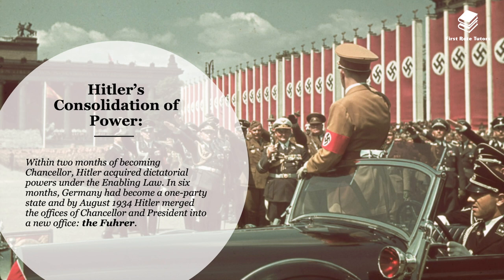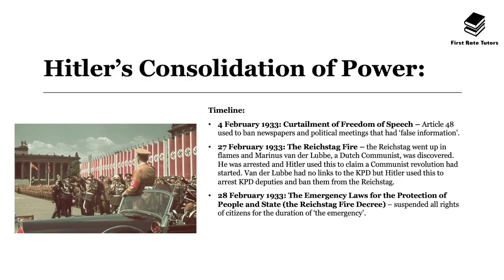When it comes to Hitler's consolidation of power, within two months of becoming chancellor he acquired dictatorial powers under the enabling law. In six months Germany had become a one-party state and by August 1934 Hitler had merged the offices of chancellor and president — which previously were separate under the Weimar constitution — into a new office, naming himself the Führer. To understand how he used and manipulated laws to his favour, it's important to understand this timeline.